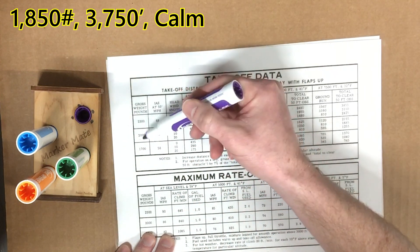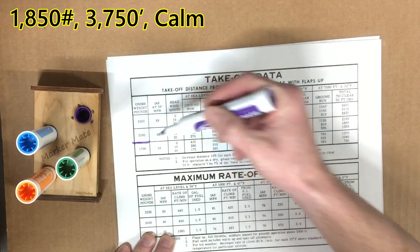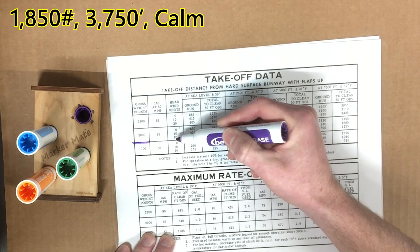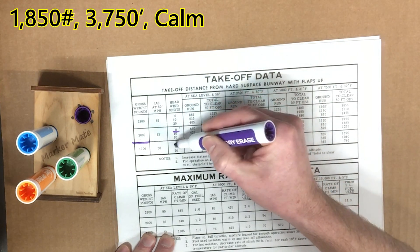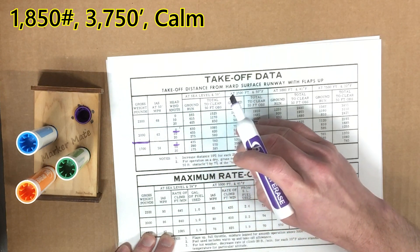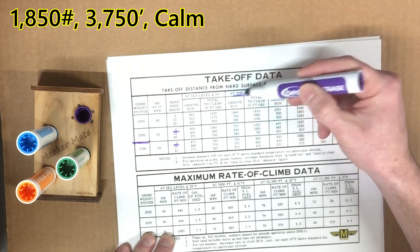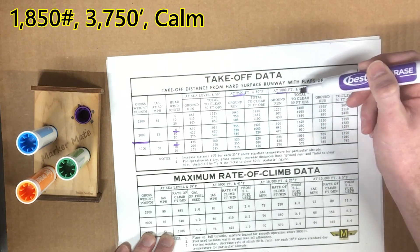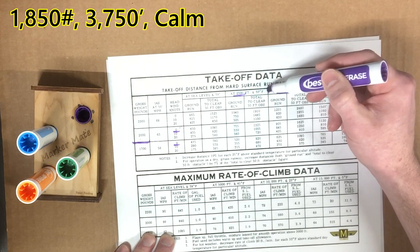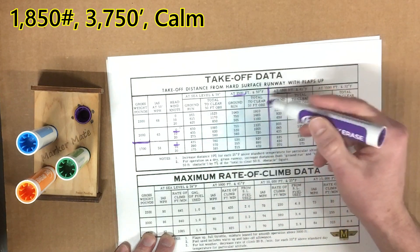1,850 does happen to be exactly halfway between 2,000 and 1,700. So we're right here. We're going to come over to the wind column. We see that we have no wind. So we're going to look at this one and this one. We're going to come across until we see our field elevation of 3,750. Well, we've got data for 2,500 and 5,000. We don't have 3,750. In this case, 3,750 is exactly in the middle. So we're on this line here.